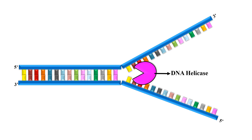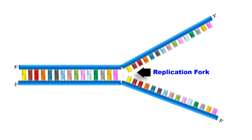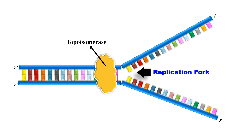DNA helicase breaks the hydrogen bonds between the bases and opens up the two strands. As the two strands are opened up, there is a creation of a replication fork. Another enzyme, topoisomerase, comes in because as the DNA strands open up, there will be creation of strain.